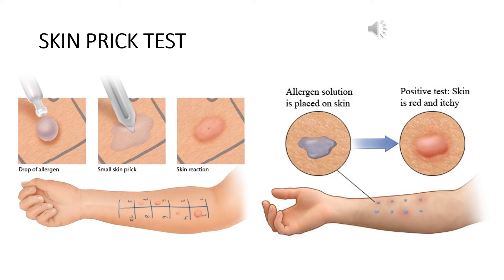From the picture we can see the skin of the person is divided into 10 quadrants, so he has been tested against 10 allergens. After the skin prick test, he is developing the red itchy small bump on quadrant numbers 2, 4, 5, and 7. Suppose quadrant 2 has the allergen animal dander, quadrant 4 has peanut, quadrant 5 has insect bite, and quadrant 7 has soy. So we can conclude that this person is allergic to the allergens in quadrants 2, 4, 5, and 7, and non-allergic to those in quadrants 1, 3, 6, 8, 9, and 10.